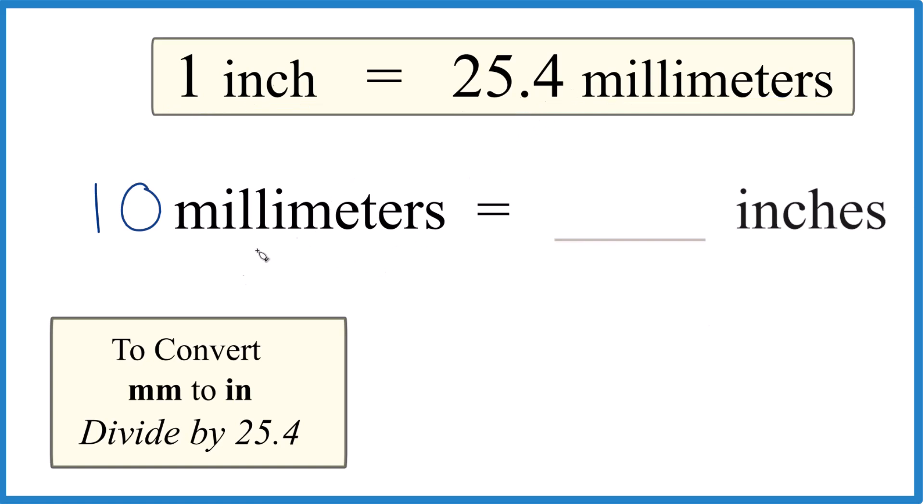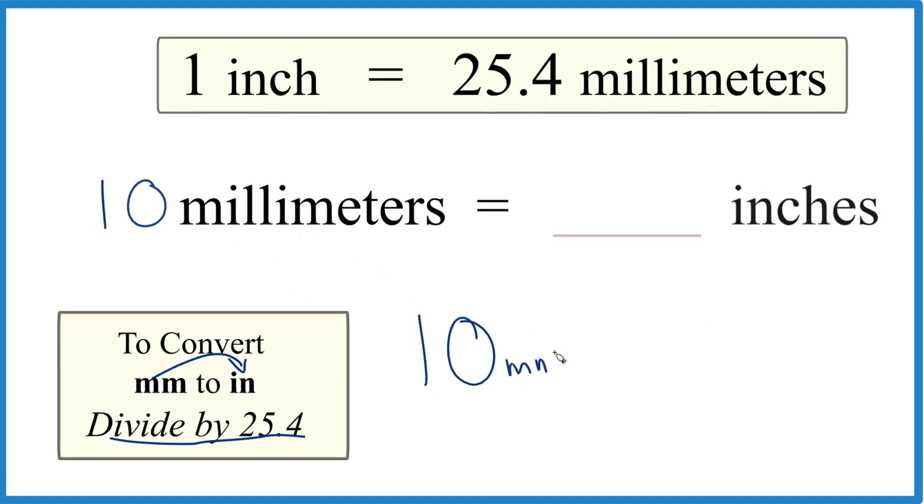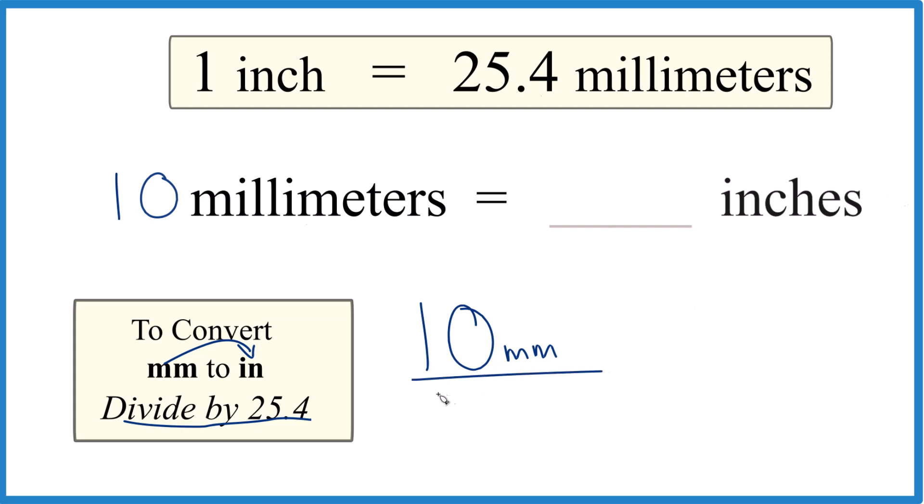So when we're going from millimeters to inches, we're going to divide by 25.4. So we take our 10 millimeters and we just divide that by 25.4, but that's 25.4 millimeters in one inch, so that's millimeters per inch. So we just divide 10 by 25.4.